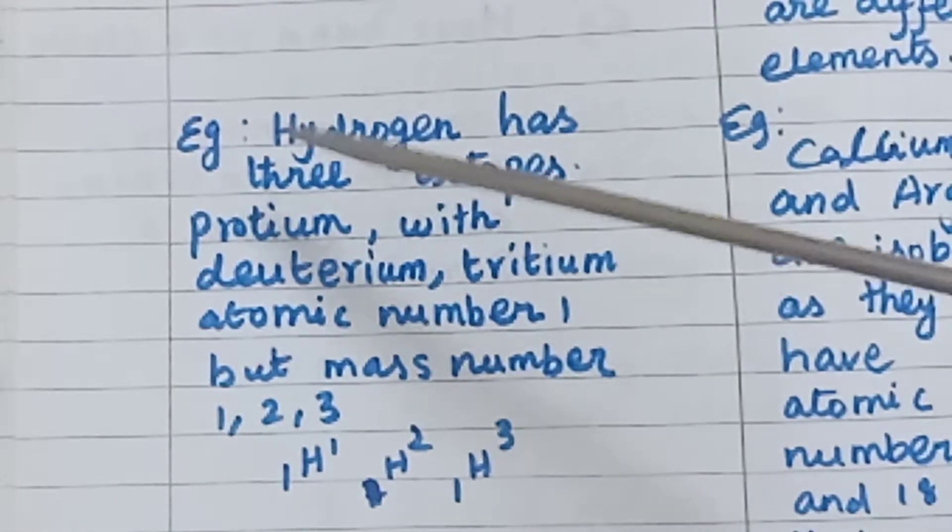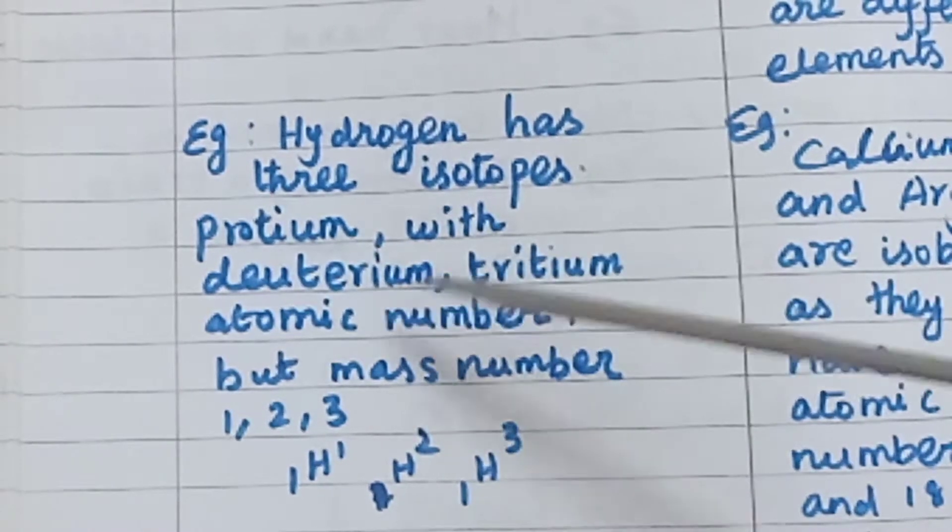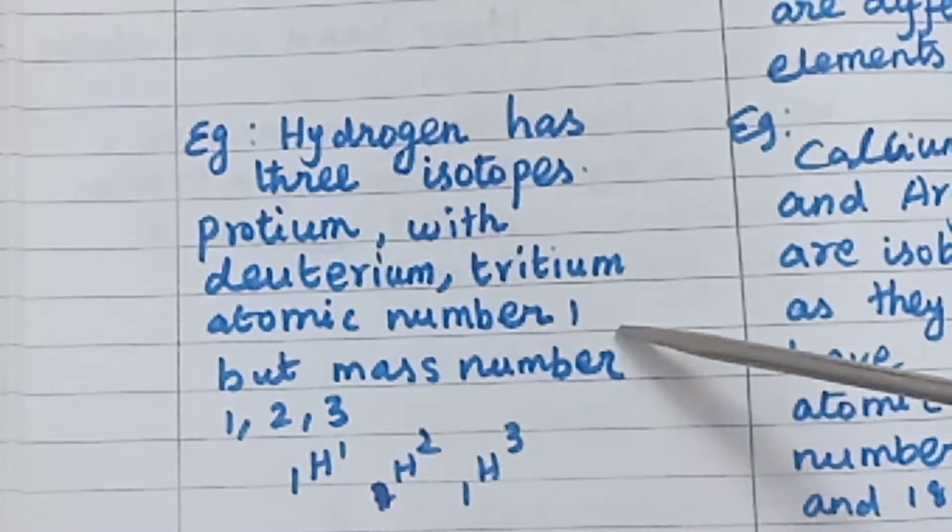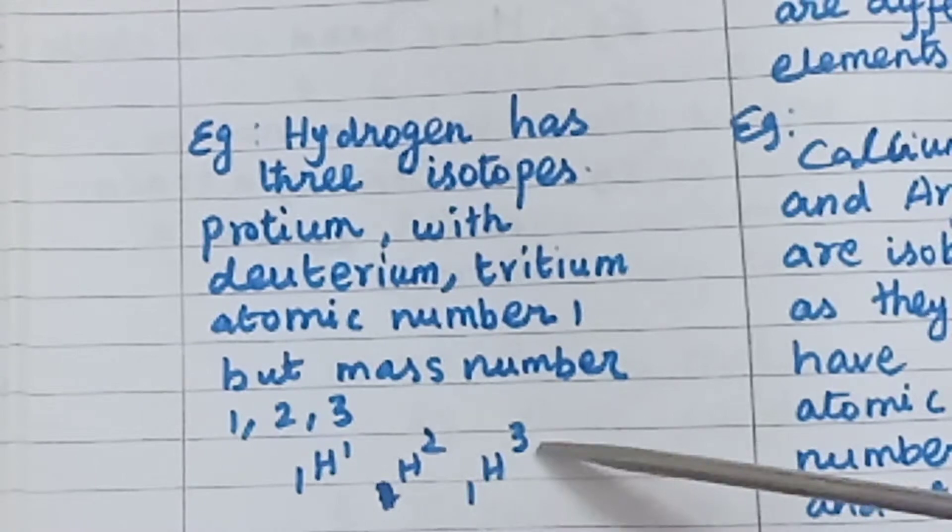Examples for isotopes: hydrogen has 3 isotopes - protium, deuterium, and tritium. All have atomic number 1 but mass numbers 1, 2, and 3 respectively. Written as 1H1, 1H2, and 1H3.